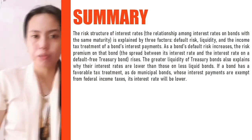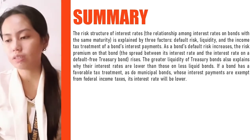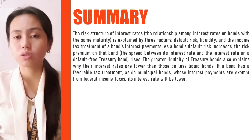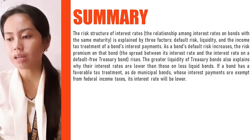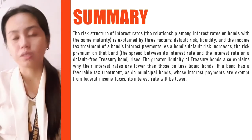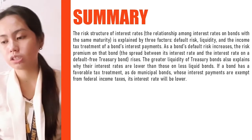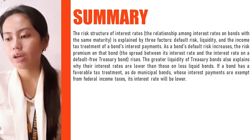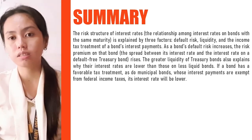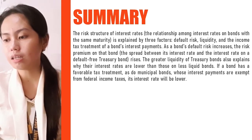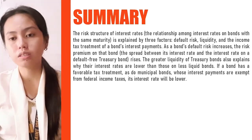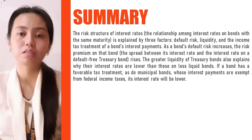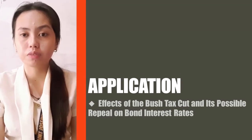Let me summarize the contents of the chapter. The chapter discusses the risk structure of interest rates — the relationship among interest rates on bonds with the same maturity — explained by three factors: default risk, discussed by Ms. Mandong; liquidity; and the income tax treatment of a bond's interest payments. As bond default risk increases, the risk premium rises. The greater liquidity of Treasury bonds explains why their interest rates are lower than those on less liquid bonds. If a bond has favorable tax treatment, as do municipal bonds whose interest payments are exempt from federal income taxes, its interest rate will be lower.